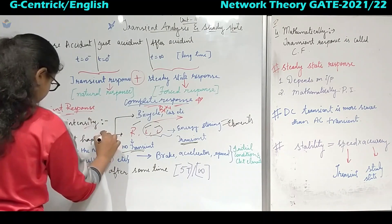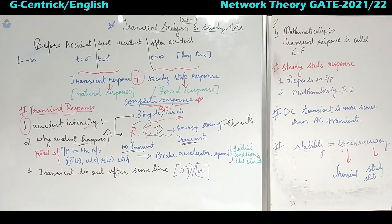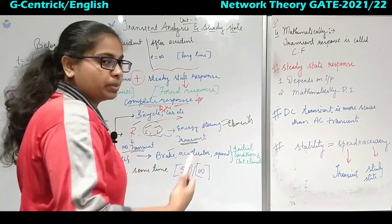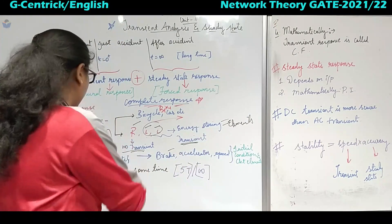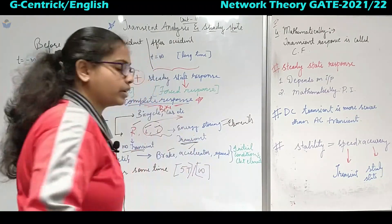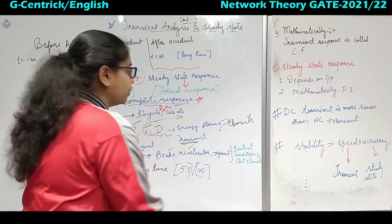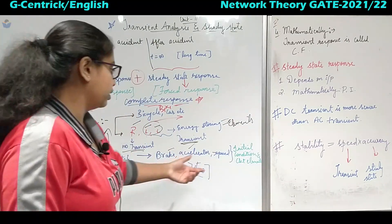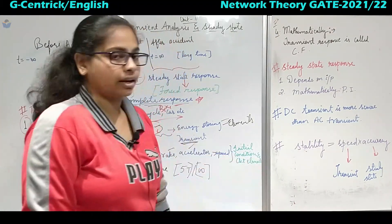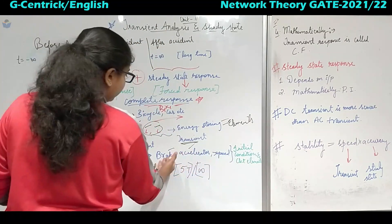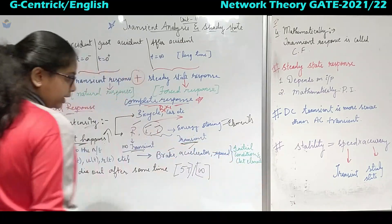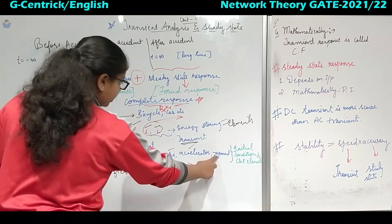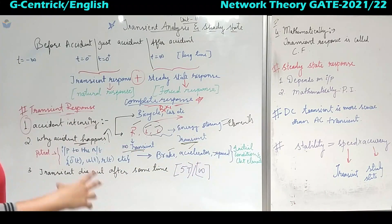Why does an accident happen? It may be due to brake failure. These are all conditions before the accident. You might have raised the accelerator, causing your speed to become imbalanced and uncontrollable, leading to an accident. These are called initial conditions and circuit elements. The circuit elements are brake, accelerator, and speed — in network terms, that is R, L, and C. Because of those initial conditions before meeting with the accident, these will be the responses.